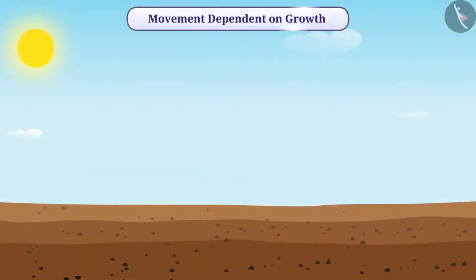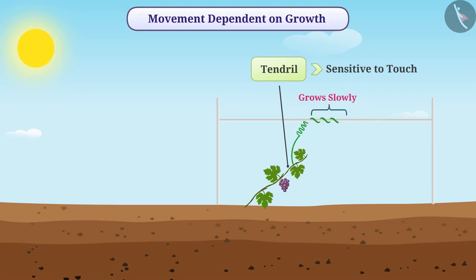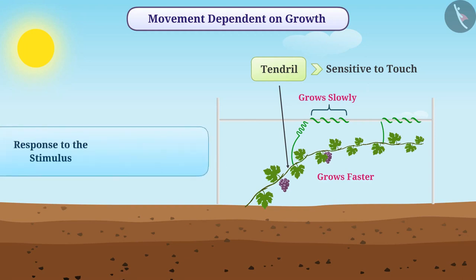In some plants such as grape plants, tendrils are sensitive to touch. When part of the tendril comes into contact with a base, that part grows slowly while the part away from the base grows faster. As a result, the tendril circles around the base and climbs over it. This response has a direct relation with growth, so such movement is called growth-dependent movement.